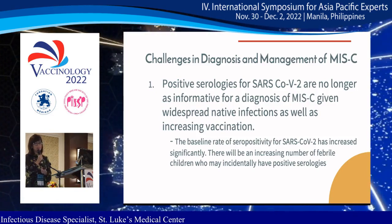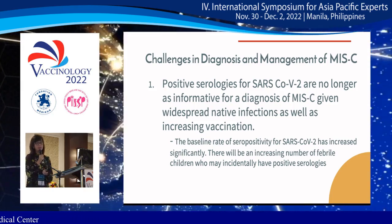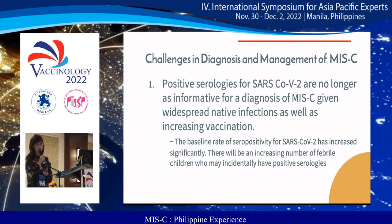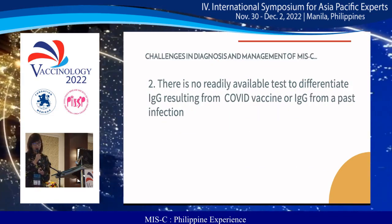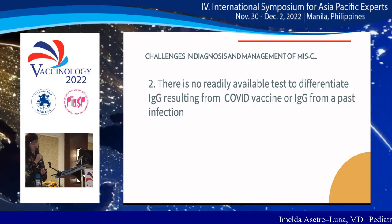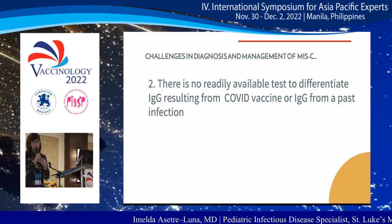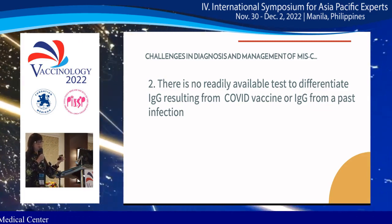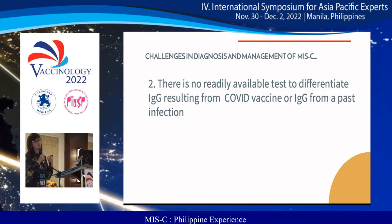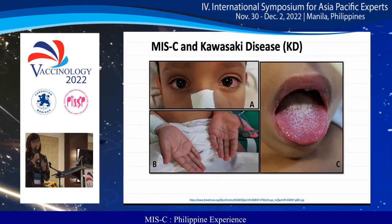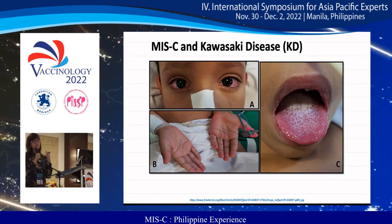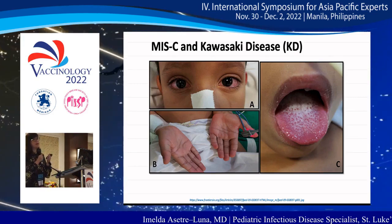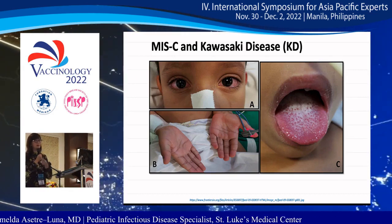The challenges in diagnosis and management of MIS-C include: positive SARS-CoV-2 serology is no longer as informative given widespread native infections and increasing vaccination. There is no readily available test to differentiate IgG from COVID vaccine versus IgG from a past infection — these tests exist in reference laboratories but not in regular hospital labs.